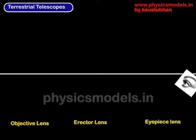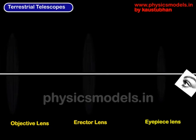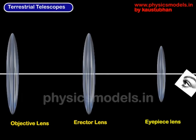Our modern terrestrial telescopes have three convex lenses, as against just two for astronomical telescopes. Let's look at an animation.